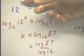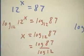Let's look at the solution of the equation 12 to the x equals 87. How are we going to solve this?